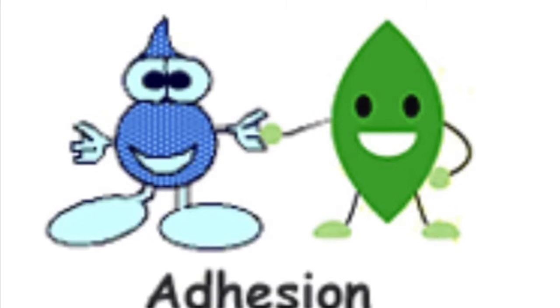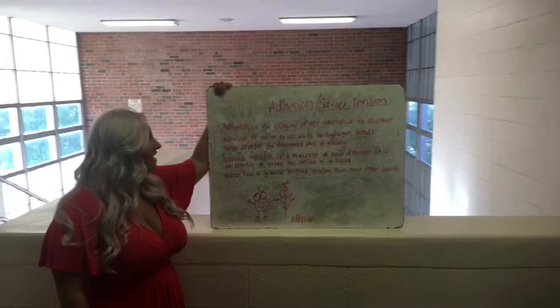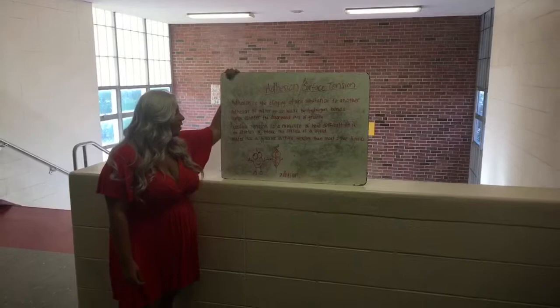Chapter 4: Adhesion and Surface Tension. Adhesion is the clinging of one substance to another. Adhesion of water to cell walls by hydrogen bonds helps counteract the flow of gravity. Surface tension is a measure of how difficult it is to stretch or break the surface of a liquid. Water has a greater surface tension than most other liquids.